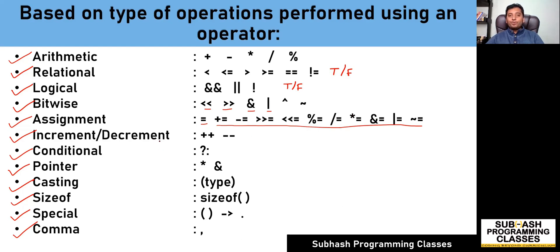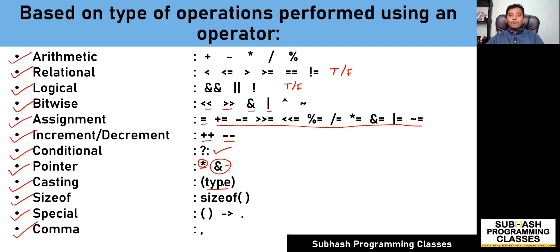Then we have the most important and most confusing: the increment operator (++) and decrement operator (--). Then we have the only ternary operator in C language — the conditional operator — which I'll explain in detail in an upcoming lesson. We also have pointer operators: the star (*) is called the dereferencing operator and ampersand (&) is called the referencing operator. Then we have casting operators, used to convert an element of one data type to another data type. We also have the sizeof operator, used to determine the size of a particular data type or variable. And then we have a few special operators such as grouping operators, pointer-to-structure operator, and the dot operator, as well as a comma operator.